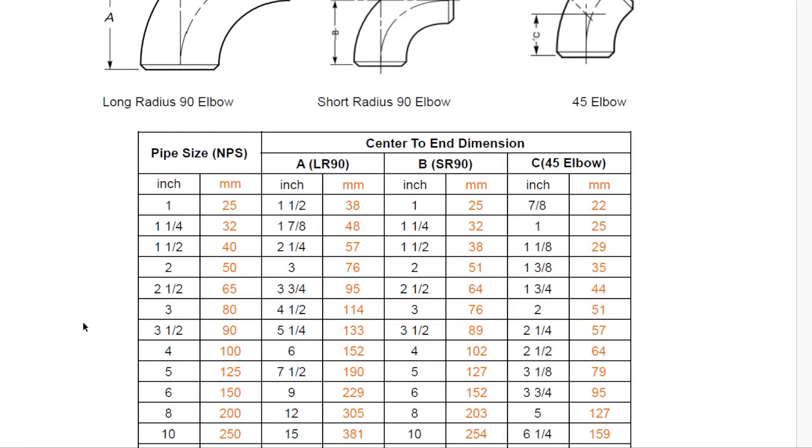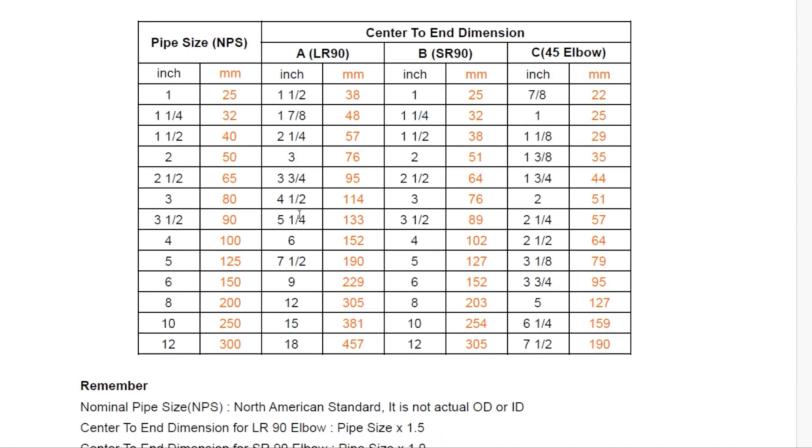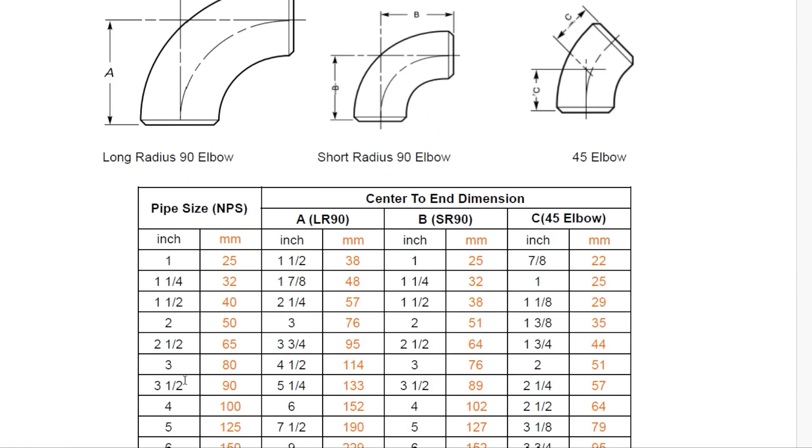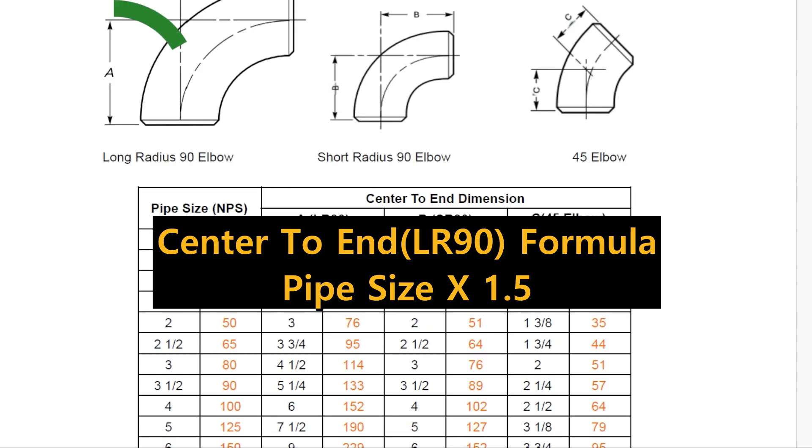Look at the other pipe sizes. 1-inch pipe is 1 and a half. 2-inch pipe is 3. 3-inch pipe is 4 and a half. 4-inch pipe is 6. 6-inch pipe is 9. 8-inch pipe is 12. 10-inch pipe is 15. What do they have in common? For a 90 degree long radius elbow, you just multiply pipe size by 1 and a half. Then, it is the center-to-end dimension.